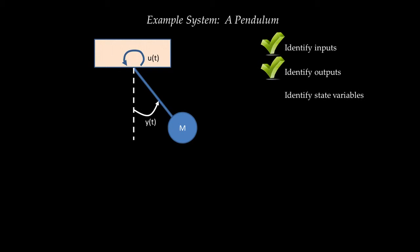The third step is to identify state variables. This is a rotational mechanical system — it stores energy due to the rotation of the pendulum, and it stores two distinct kinds of energy. First, as the mass of the pendulum rotates, it rises upwards and stores potential energy. Second, as the mass moves, it stores kinetic energy. The potential energy is a function of the angle relative to the vertical, and the kinetic energy is a function of the angular velocity.